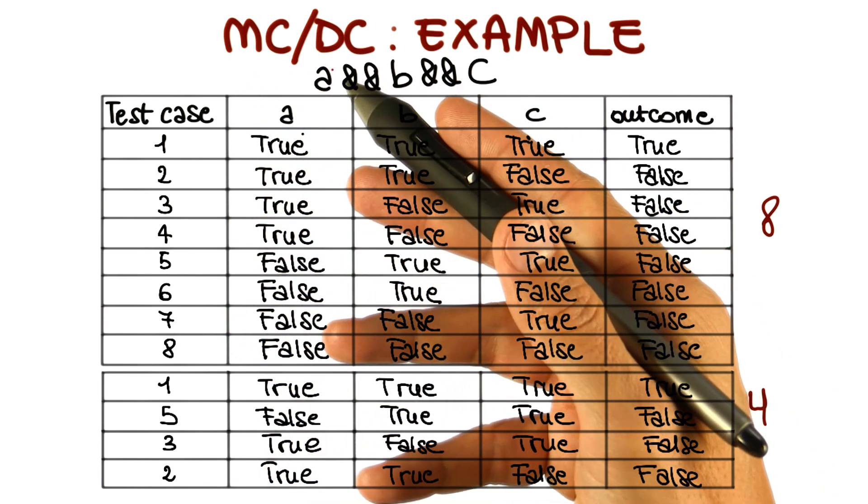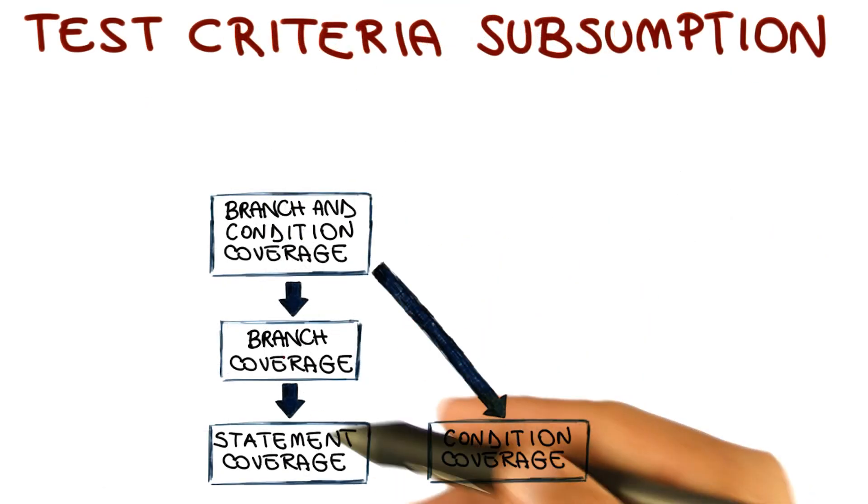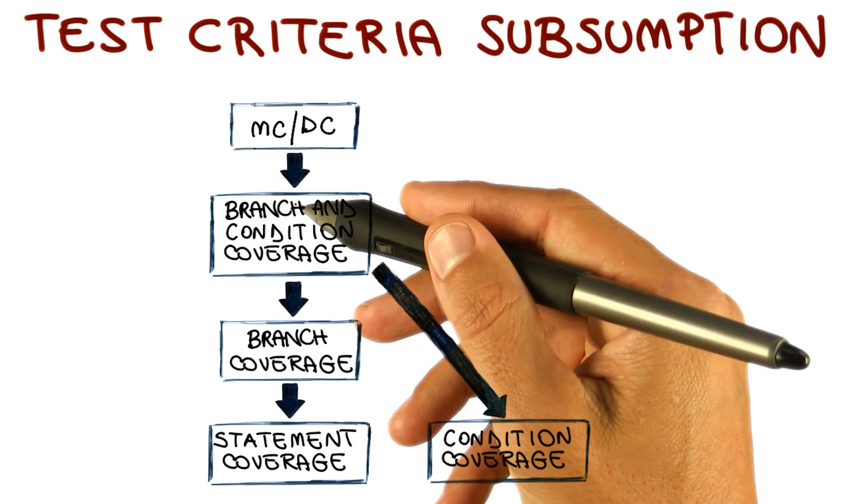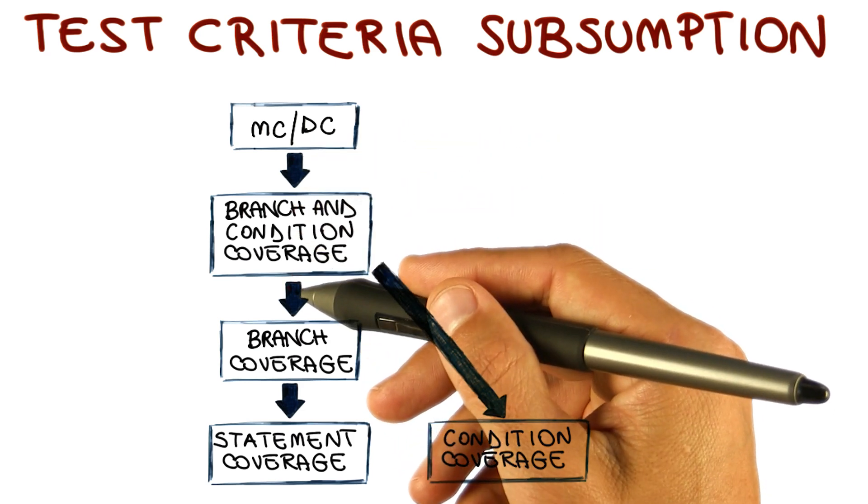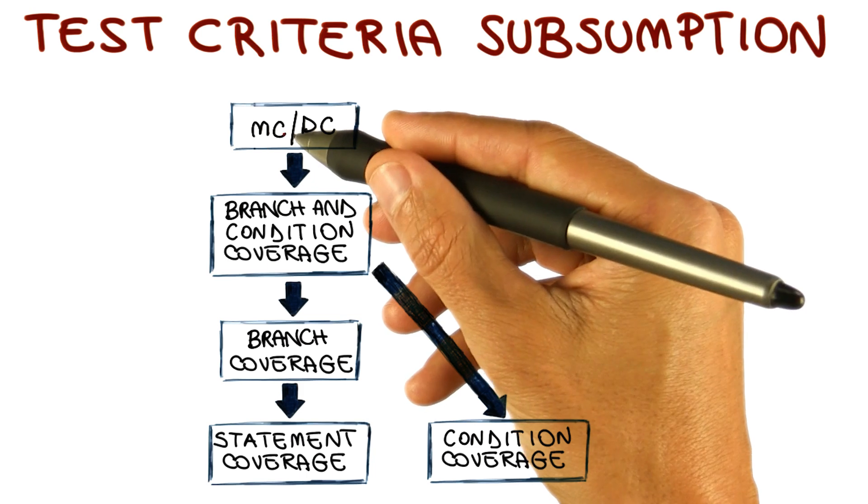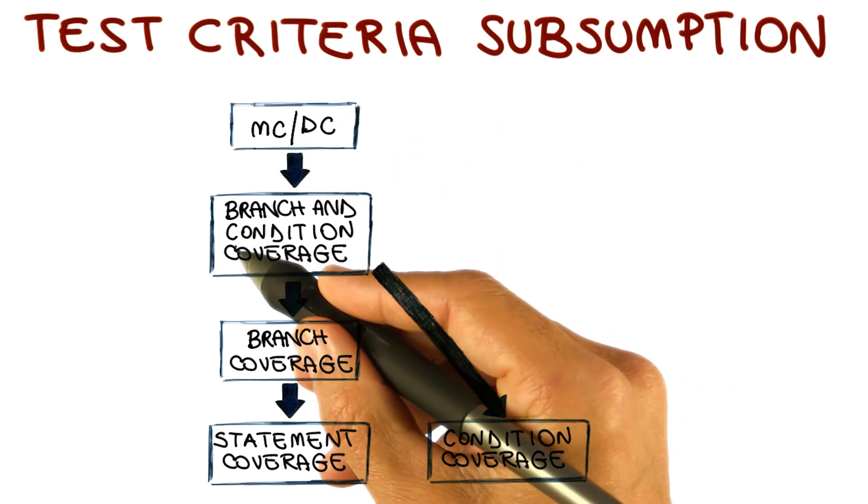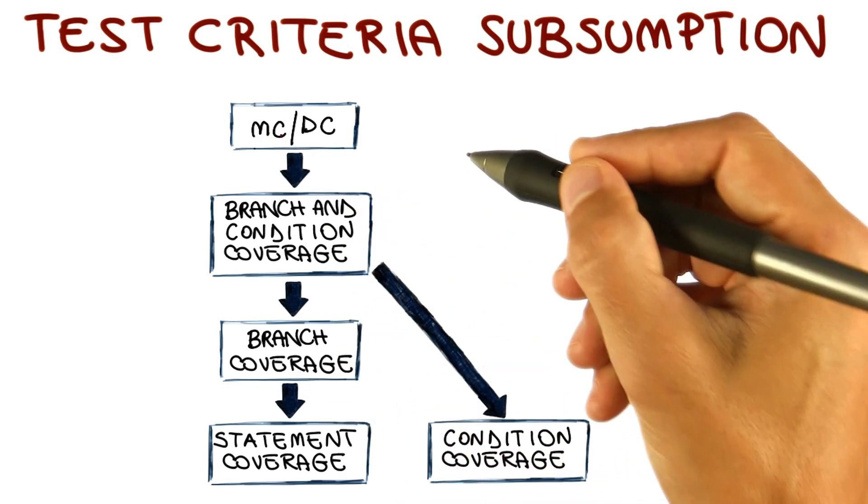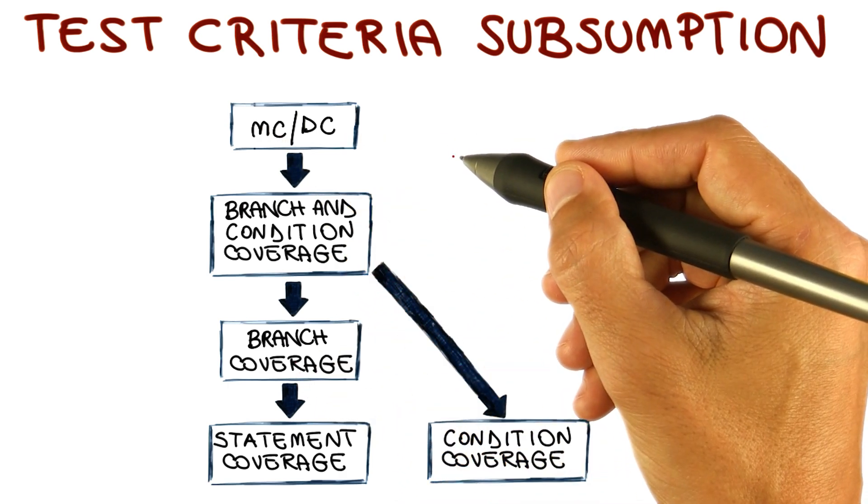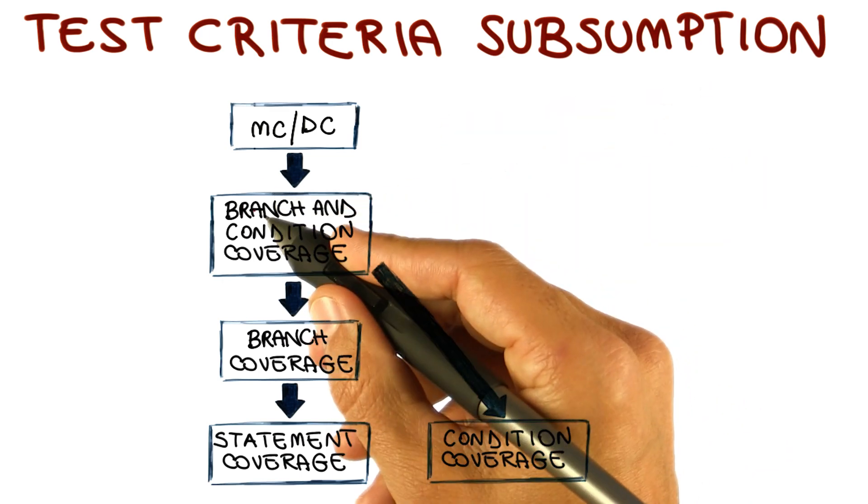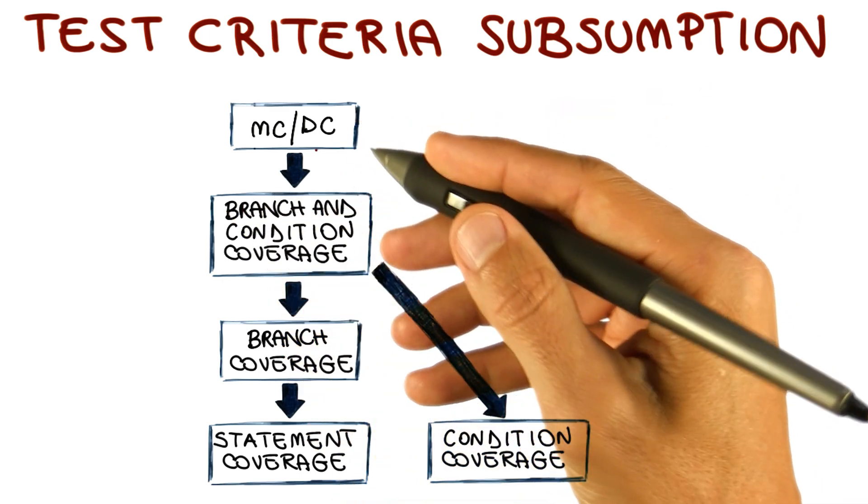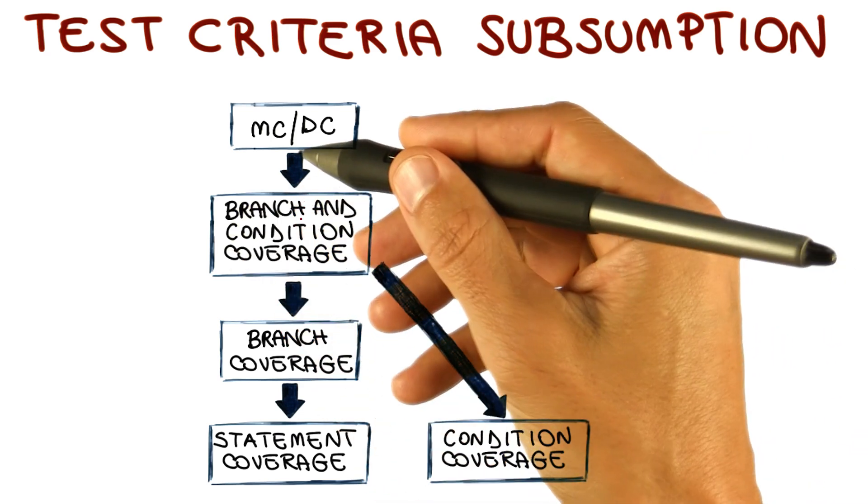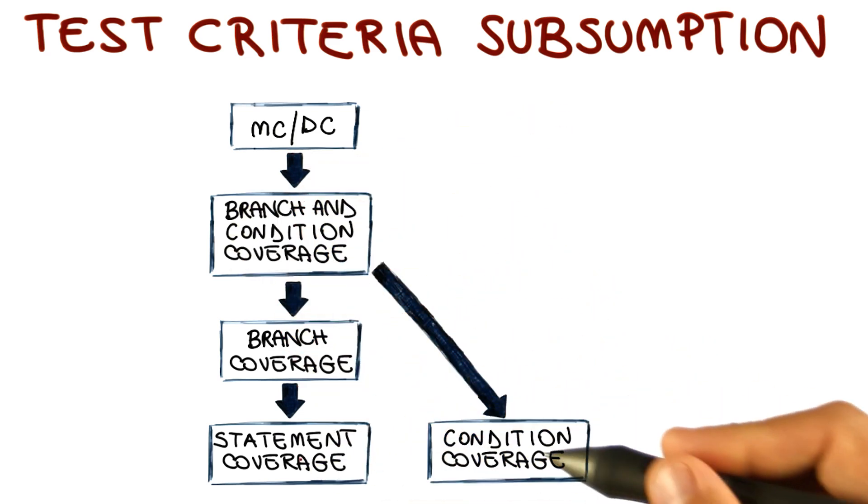Now let's see where MC/DC stands in our subsumption hierarchy. This is what we had so far in the hierarchy, and this is where the MC/DC criterion will stand. MC/DC criterion is stronger than branch and condition coverage. Why? Because it requires every single condition to be true and false, and therefore it subsumes the condition coverage criterion. And it also requires every predicate to be true and false, and therefore it subsumes branch coverage. In addition, it has the additional requirement that the true and false values of the conditions must also decide the overall value of the predicate. So it's stronger, which is more thorough, than branch and condition coverage, and as usual, also stronger than branch coverage, statement coverage, and condition coverage.